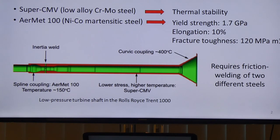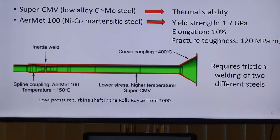Currently, the materials used for shaft are super alloys used for the curved coupling, which have good structural stability but do not have sufficient strength. Therefore, it always needs to be friction-welded with MA100 to provide strength at the spline coupling. When the temperature goes to 480°C, it will produce unstable retained austenite in the MA100 and precipitate coarsening, which is not desirable. If we can eliminate the friction welding process, that would be beneficial.